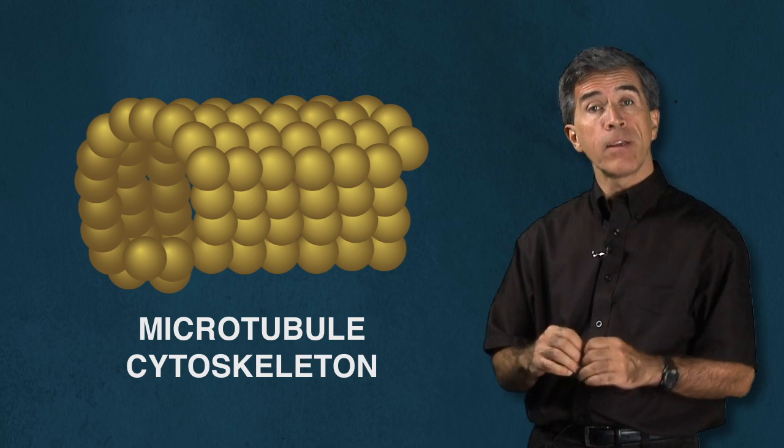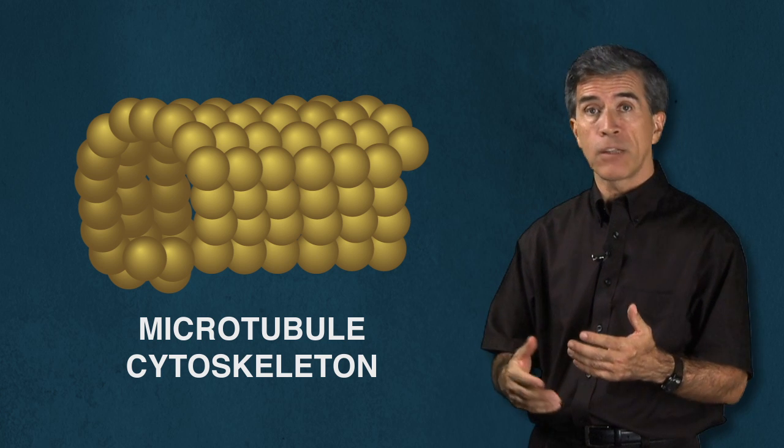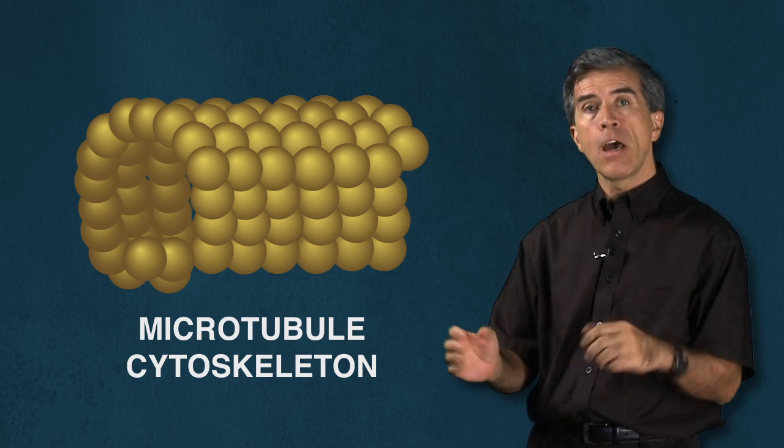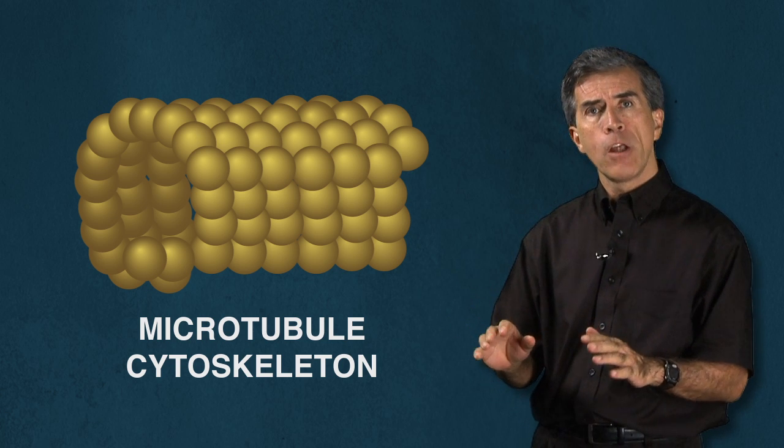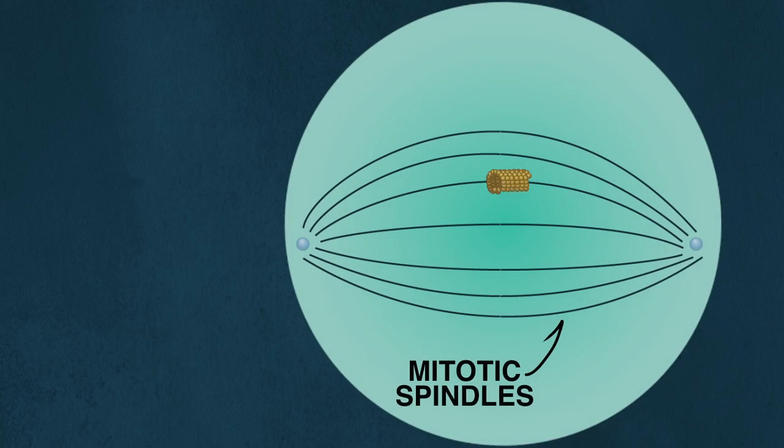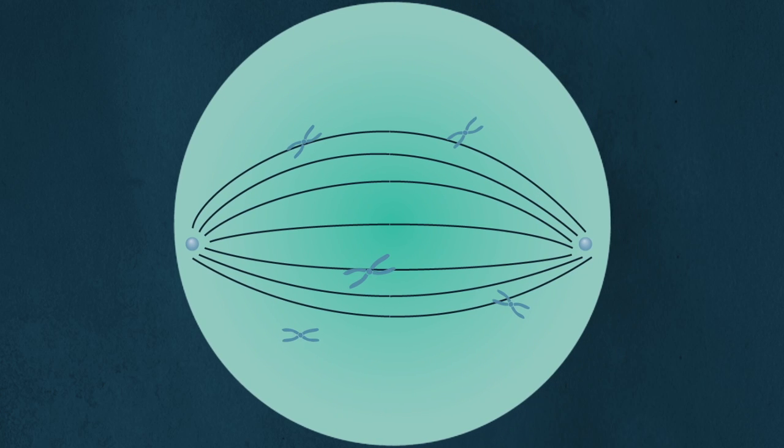Instead of having the vast array of microtubules that you find during interphase that transports organelles throughout the cell, during mitosis the microtubules are completely reorganized to form a symmetrical structure called the mitotic spindle. The function of this mitotic spindle is to capture and move around the chromosomes inside the dividing cell.